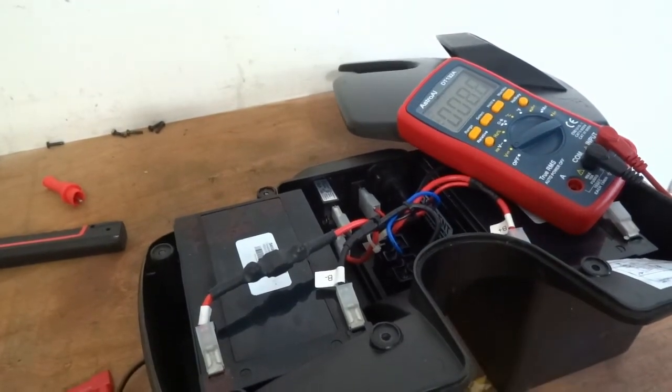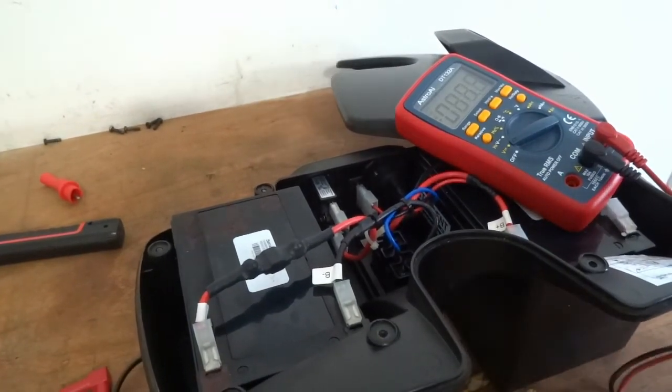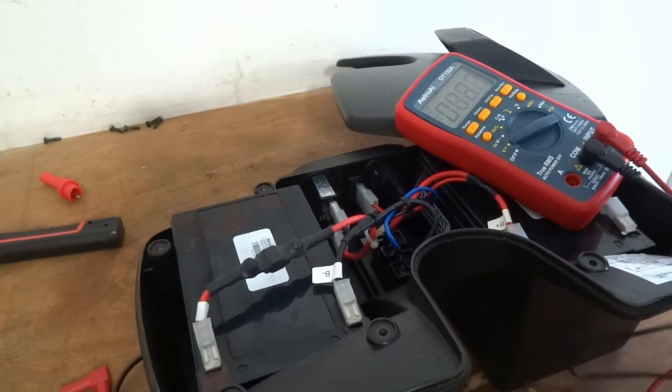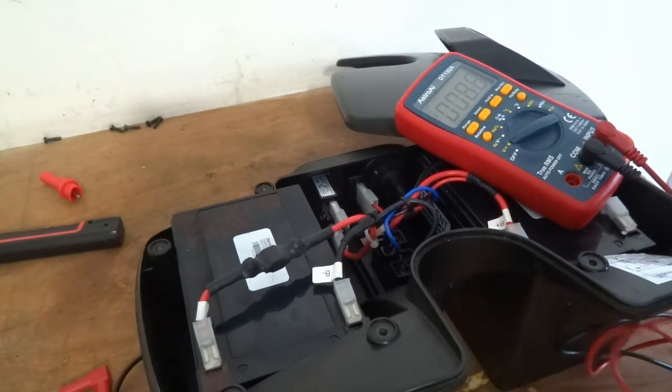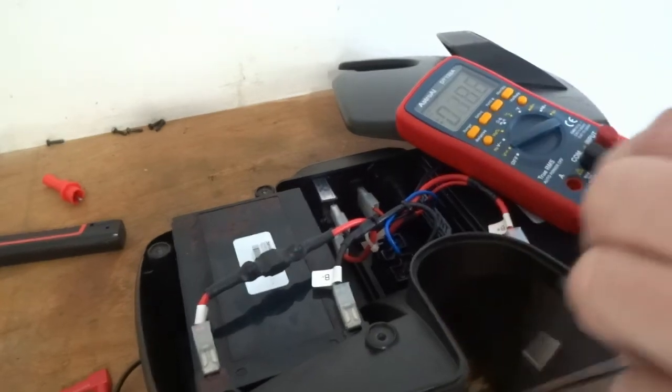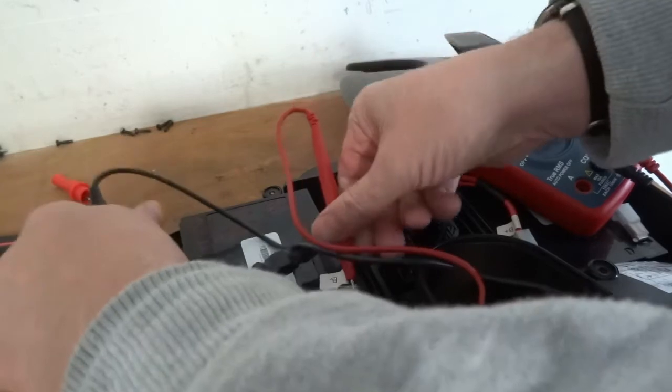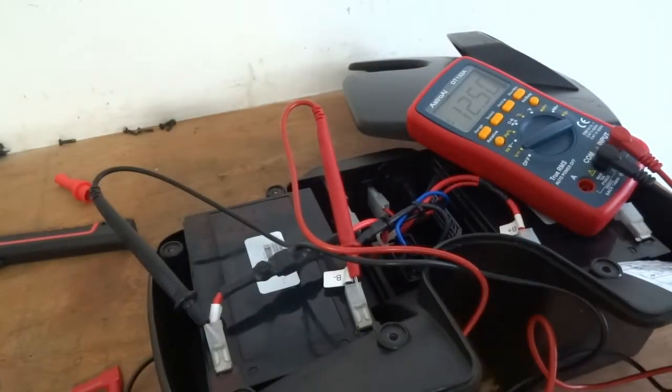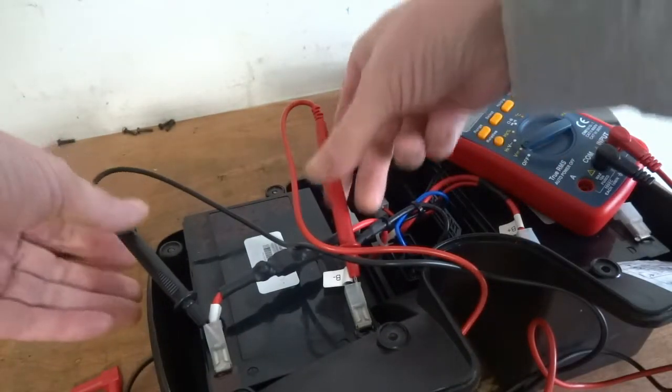Okay then, so got it set to volts DC. We'll test each battery separate first. So 12.5 volts, so about half charged.